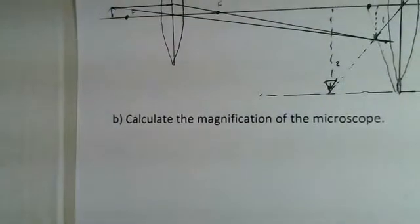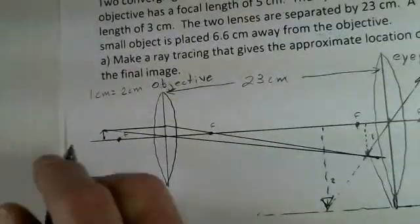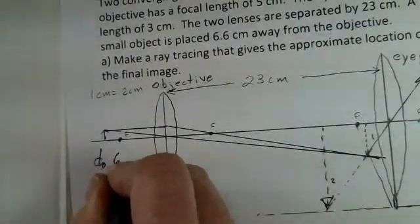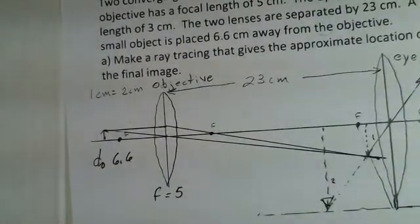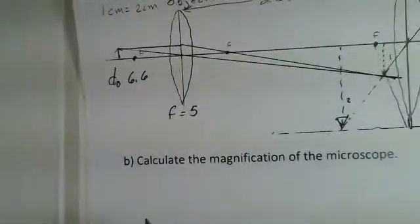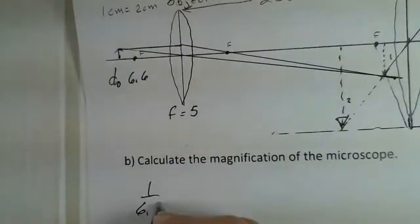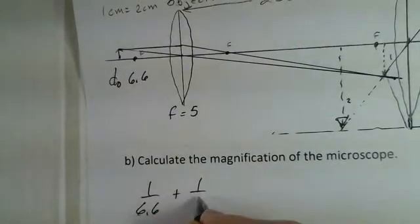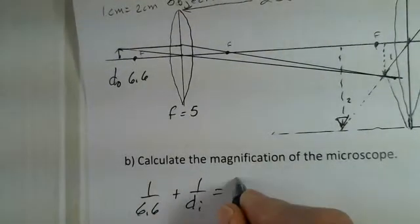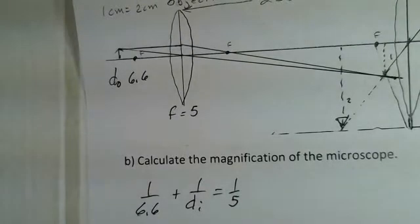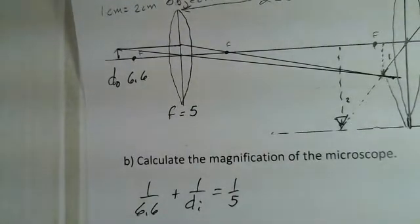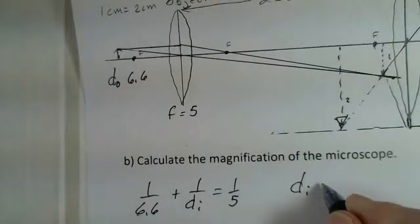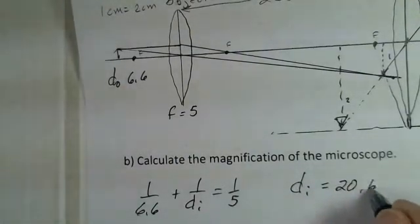So we had up here object distance 6.6 centimeters, focal length 5 centimeters. So we'll work on this lens first. So 1 over 6.6, the object distance, plus 1 over DI, our unknown, is 1 over 5. Again, you should pause recording and on your own calculate the DI value. I came up with 20.625 centimeters.